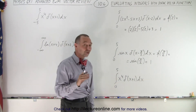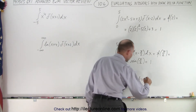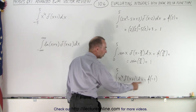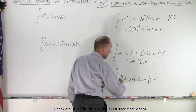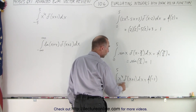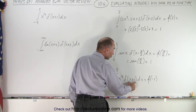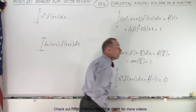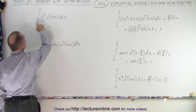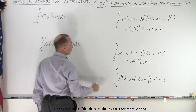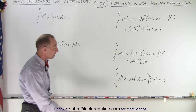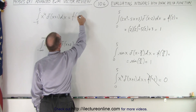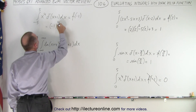Over here we need to be a little bit careful. This would be equal to the function evaluated when x equals negative 1, but notice the limit of integration doesn't include negative 1. Which means the delta function never reaches zero within the limits of integration, so this is simply equal to zero. But if the limits did include negative 1, then we could say this equals the function at x equals negative 1, which would be negative 1 to the fourth power, simply equal to 1.